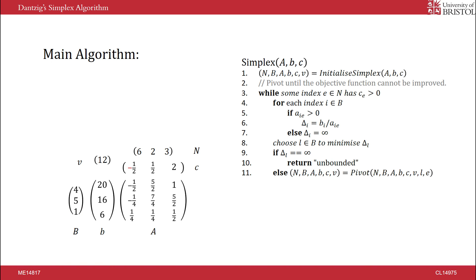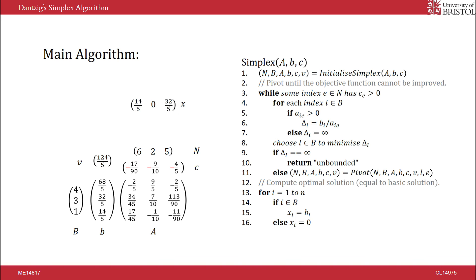At the end of iteration 1, z equals 12, then it becomes 16, then it becomes 18, then it becomes 124 over 5. At this point, all coefficients in the objective function are negative, and the while loop terminates. Lines 13 to 17 output the values of the basic variables.